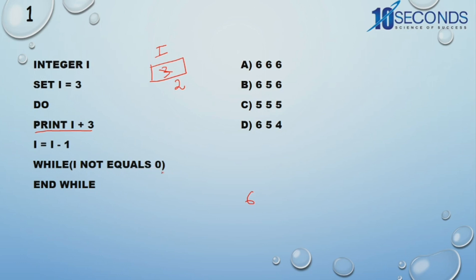While i not equal to 0 — i is 2, 2 is not equal to 0, so again it will go to the loop. Again print i plus 3: i is 2, so 2 plus 3 is 5, so 5 will be printed. Again i = i minus 1, so 2 minus 1, i will become 1. While i not equals 0 — i is 1, 1 is not equal to 0, so again it goes to the loop. Print i plus 3: i is 1, 1 plus 3 is 4. So 6, 5, 4. i = i minus 1, so 1 will become 0. While i not equal to 0 — but i is 0, so it will come out of the loop. So the answer is 6, 5, 4 — here the answer is D.